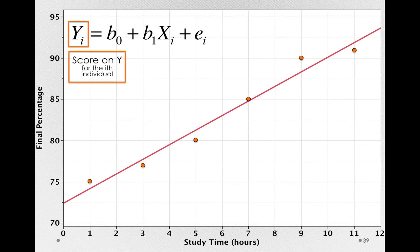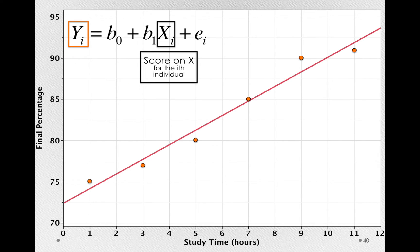First, the y i's. This is the score on y for the i-th individual. So literally, the height of each of these points in terms of the y-axis. Next, let's look at the score on x for each individual. This is simply where those individual observations are on the x-axis: 1, 3, 5, 7, 9, and 11.